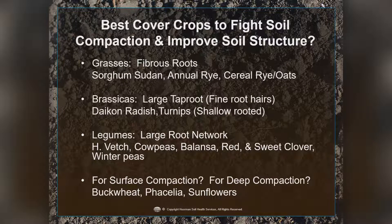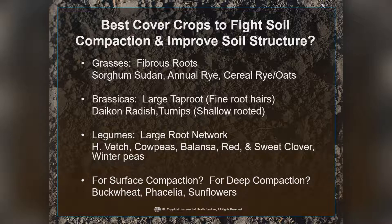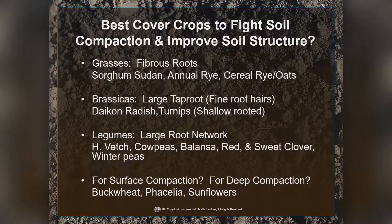The best cover crops to fight soil compaction and improve soil structure: grasses are probably the best, with fibrous roots — sorghum sudan, annual ryegrass, cereal rye, and oats are very good at adding organic matter and pore space. Brassicas are also very good because they have large tap roots with very fine root hairs — about half the root mass of a radish is in very fine hairs. Legumes can have a large root network: hairy vetch, cow peas, balencia clover, red and sweet clover, and winter peas. For surface compaction, buckwheat is probably the best, and for very deep compaction, sunflowers are also very good.